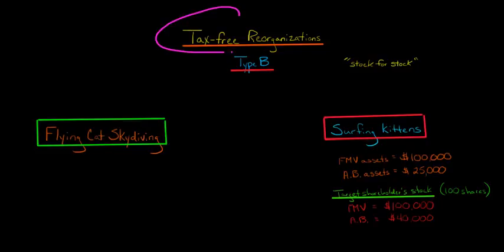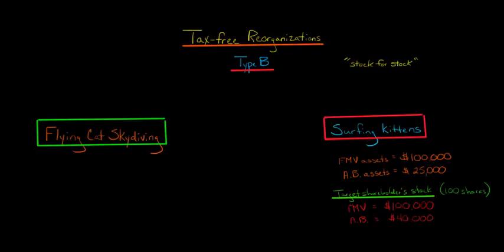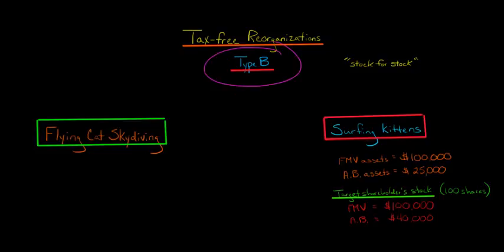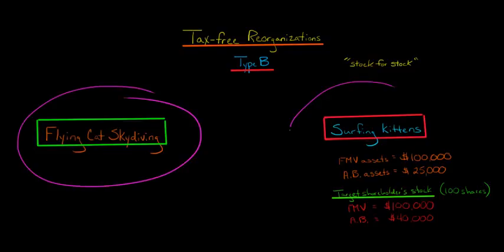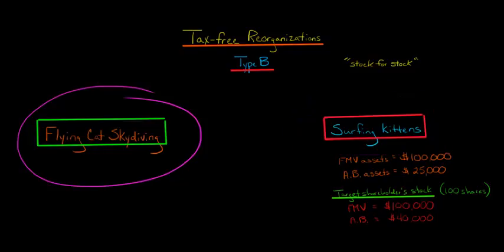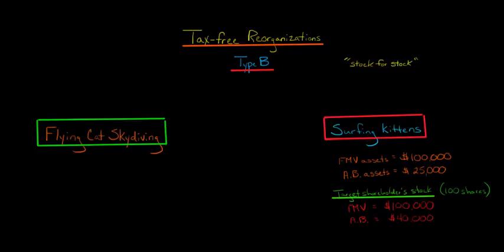We've been talking about tax-free reorganizations, and in this video we're going to discuss the type B tax-free reorganization. A type B reorganization is a transaction that allows one corporation to acquire another corporation tax-free, with neither the target nor the purchaser nor the target shareholders incurring any kind of tax, by basically exchanging stock for stock.